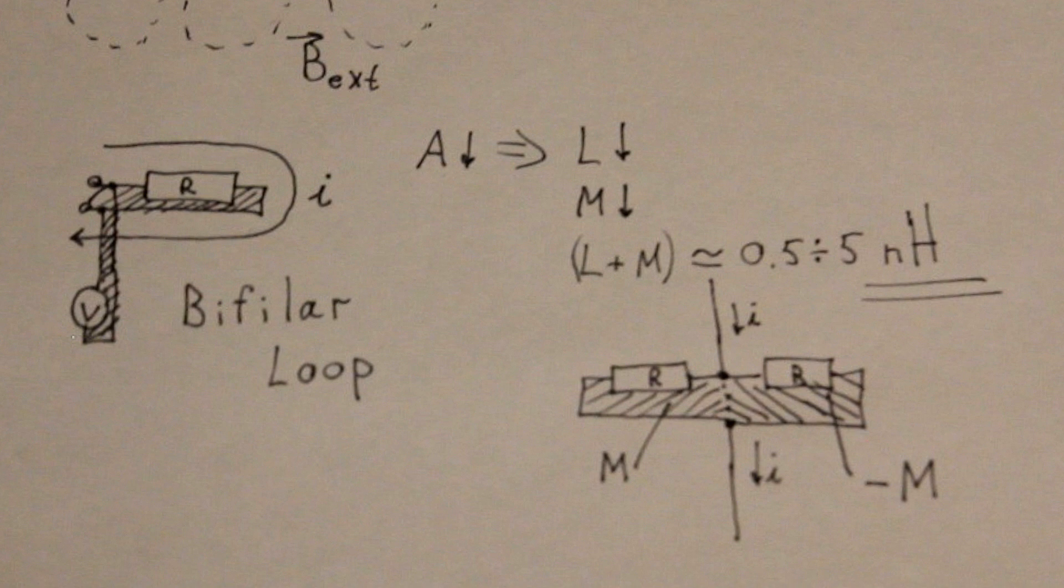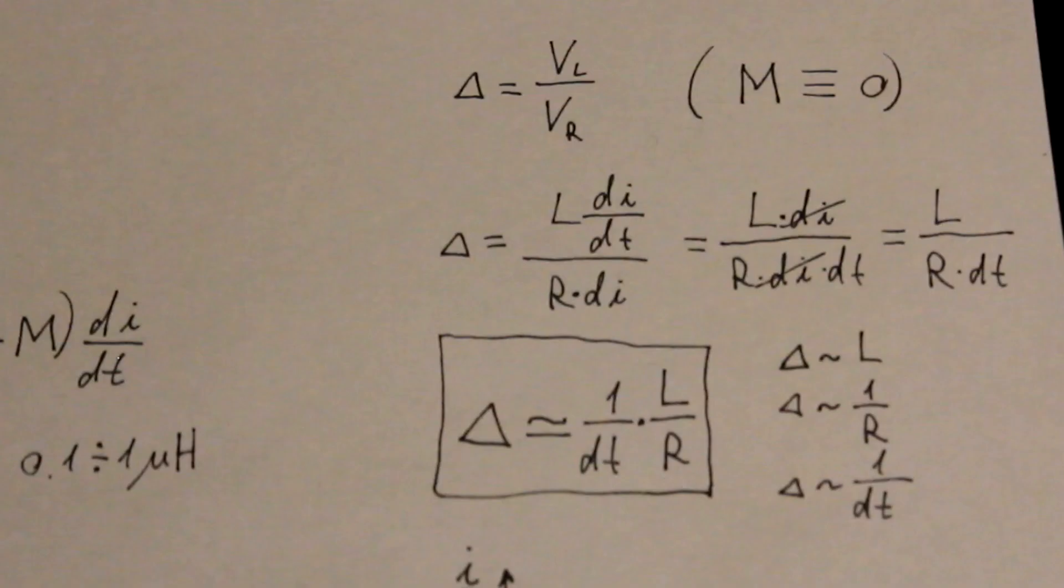Now, let's quickly estimate how crucial the measurement error will be for a given shunt. For this, we will assume that all the magnetic field in the loop is created by the current through the resistor only, so M equals to 0.